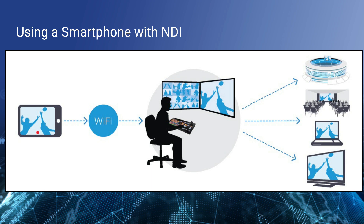Using a smartphone with NDI allows you to use regular Wi-Fi over your local area network, using a wireless access point to connect to the local area network. From there you can ingest that video into video production software like OBS, Wirecast, vMix, NewTek TriCaster, and many other solutions, and from there stream out to YouTube, Facebook, etc. It's a local area network technology.